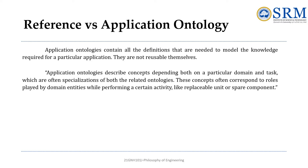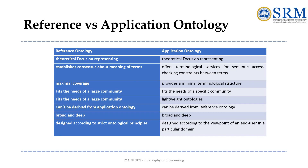Consider a common example: designing an ontology for an e-commerce website like Amazon. A reference ontology would try to define what a product is in a deep philosophical sense — what makes an item a product, what categories exist universally. An application ontology, on the other hand, would focus on how the website organizes products for search, recommendations, and transactions. Clearly, application ontology is more practical for this scenario.